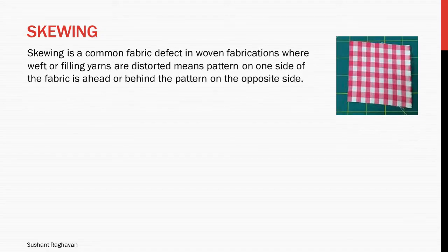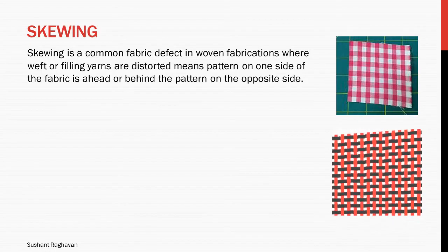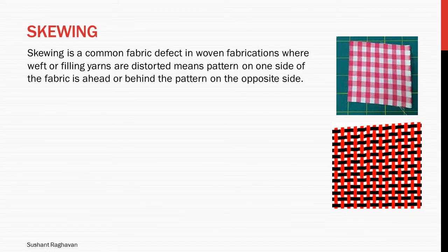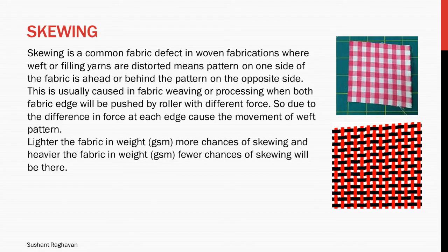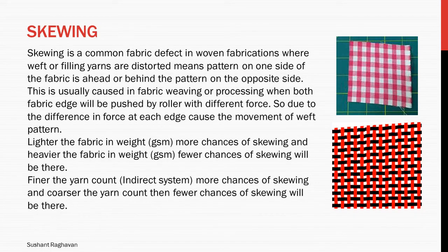Skewing is a common fabric defect in woven fabrication where weft or filling yarns are distorted, meaning the pattern on one side of the fabric is ahead or behind the pattern on the opposite side. This is usually caused during fabric weaving or processing when both fabric edges are pushed by rollers with different force, and the difference in force at each edge causes the movement of the weft pattern. Lighter the fabric in weight GSM, more chances of skewing; heavier the fabric in weight GSM, fewer chances of skewing. Finer the yarn count in the direct system, more chances of skewing; coarser the yarn count, fewer chances of skewing.